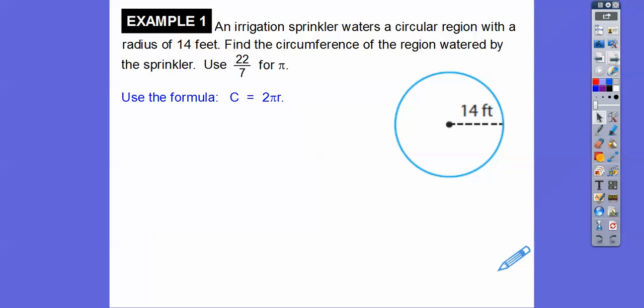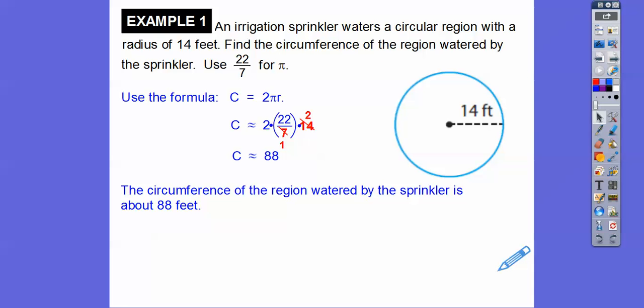So here it is right here. And then we can cross cancel some stuff right here. So 7 goes into 7 once. 7 goes into 14 twice. I think that's what I did. Yeah, that's what I did. And then I'm just going to multiply. So I have 2 times 22 is 44 times 2 is 88. So 88 feet. So circumference is in units. So it's going to be 88 feet right there.